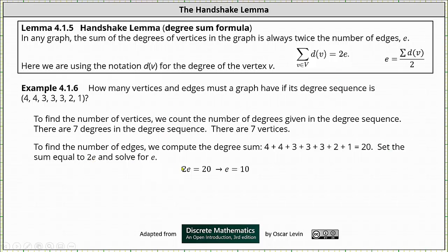This gives us the equation 2e equals 20. Dividing both sides by 2 we have e equals 10. We now know the graph must have seven vertices and 10 edges.